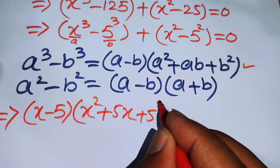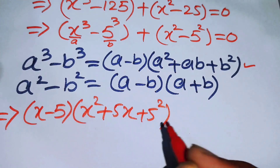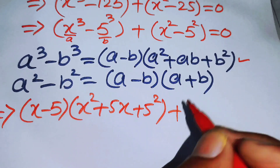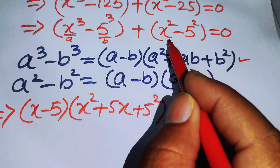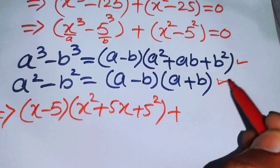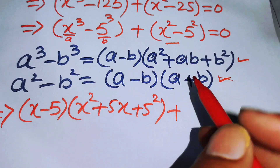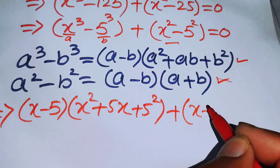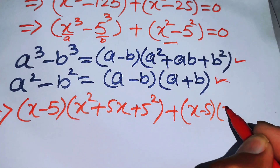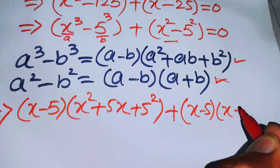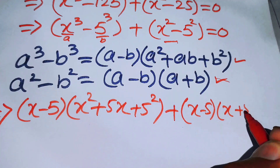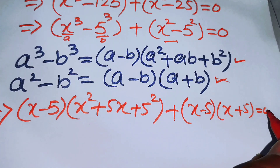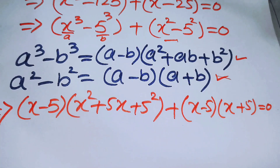This gives (x minus 5)(x squared plus 5x plus 25), and then applying the difference of squares formula to (x squared minus 25) gives (x minus 5)(x plus 5), so our equation becomes (x minus 5)(x squared plus 5x + 25) plus (x minus 5)(x plus 5) equals 0.